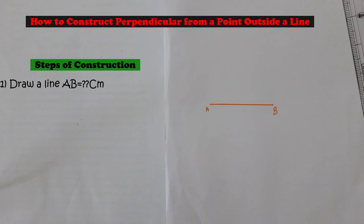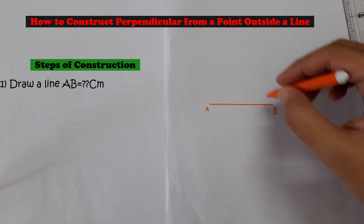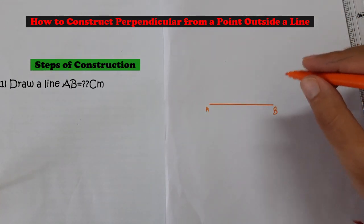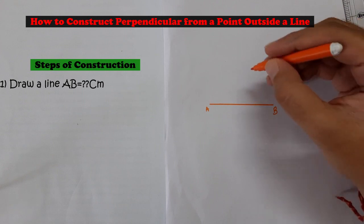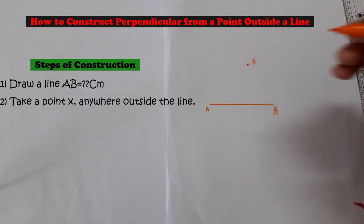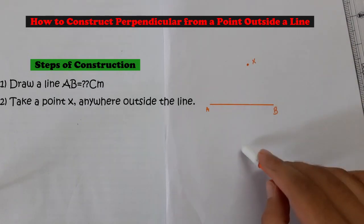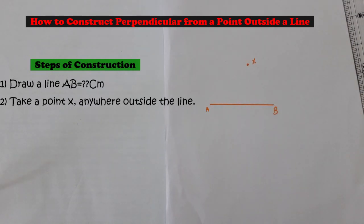Let's take it point A and point B. So what I need to do is to construct a perpendicular to this line AB from a point which is outside. So I can take point wherever I can as it is not mentioned where it is. So let's say I am taking it here, this is point X.